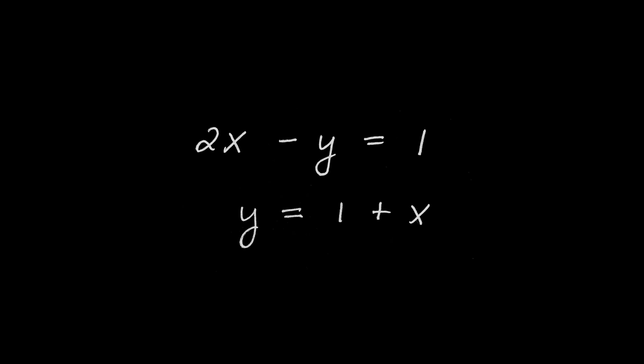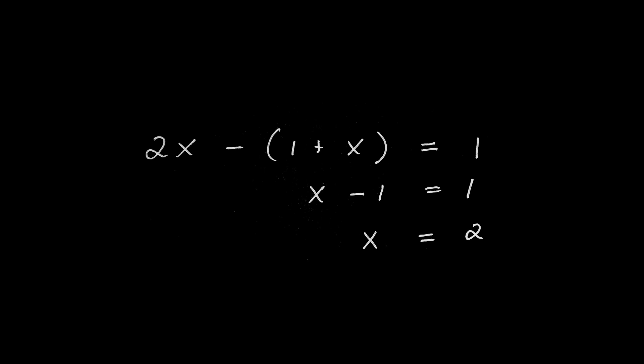There are a couple of ways to solve this. The easiest is to solve one equation for one unknown and plug it into the other. I've taken the second equation, y minus x equals 1, and solved it for y, writing y equals 1 plus x. I'll take that and plug it into the first equation — wherever I see a y in 2x minus y equals 1, I put 1 plus x. That gives me 2x minus the quantity (1 plus x) is equal to 1.